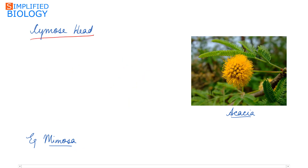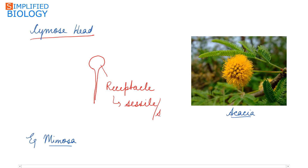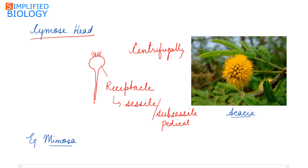Last is cymose head, where the tip of the main stem is swollen up to form a receptacle upon which develop either sessile (without pedicel) or sub-sessile (having a small pedicel) flowers. These flowers develop centrifugally — the inner ones are the older ones and the outer ones are the younger ones. This is known as a cymose head; the best example is Cassia, and another example is Mimosa, also known as the Touch Me Not plant.